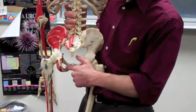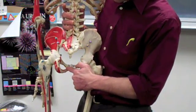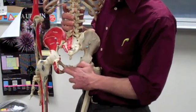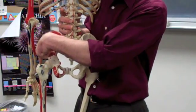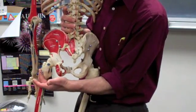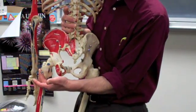So the obturator internus goes from the medial obturator foramen, wraps around the lesser sciatic notch and attaches to the greater trochanter. Again, laterally or externally rotating the thigh.